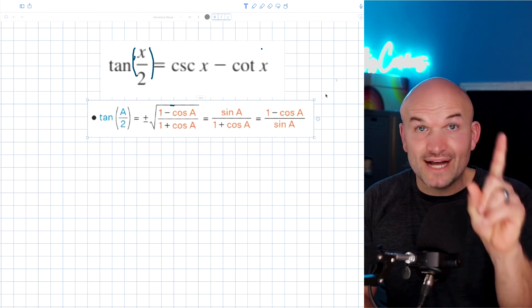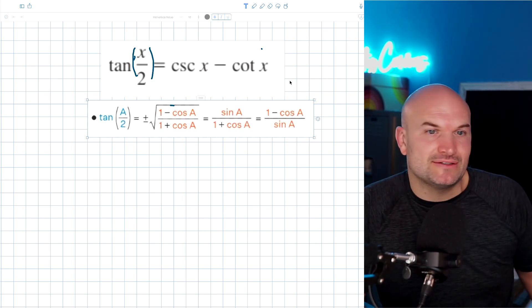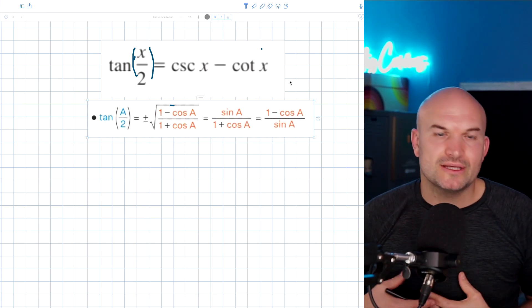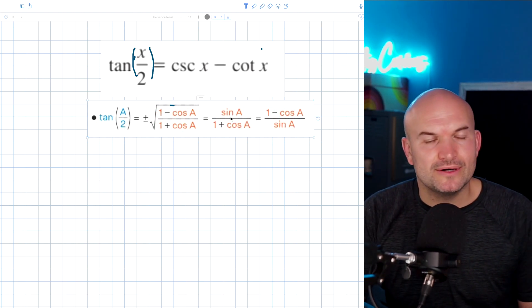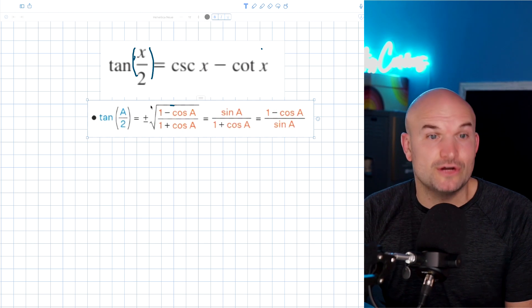Now, here's the thing. One, you got to know your identities, right? You got to know your half angle identities or your double angle, the product sum, and so forth. So it's very important to know your identities.